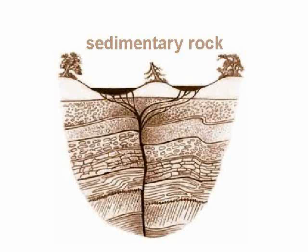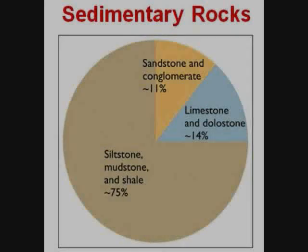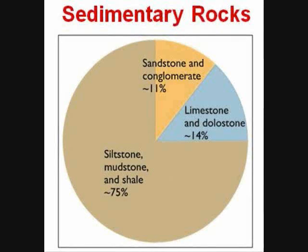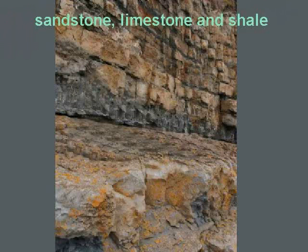Therefore, sedimentary rock is essential to us in our way of life, giving it tremendous economic value. This is pretty impressive for a rock, don't you think? Here is a chart showing the composition of sedimentary rock. As you can see, most of it is siltstone, mudstone, and shale. The two important ones are limestone and sandstone — these are the two that contain most of the oil, where the oil reservoirs are found.